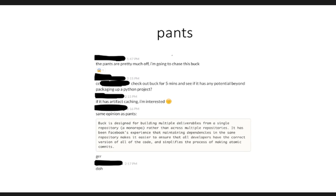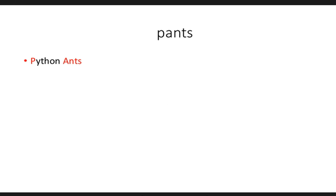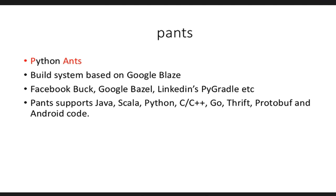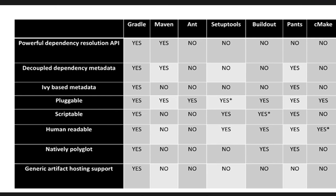Pants, as I said, is just Python ants — a build system built at Twitter, based on a build system used at Google called Blaze. Pants started back in 2011. Google very recently open-sourced Blaze; it's called Bazel now. Facebook has Buck, Google has Bazel, LinkedIn has something called PyGradle. The good thing with Pants is that it supports building a whole bunch of other things — it's polyglot, not just for building Python.